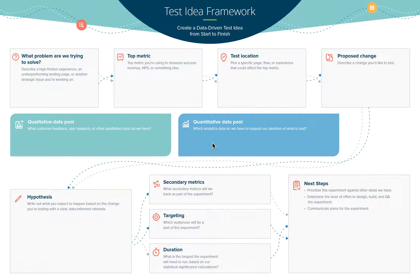Then figure out your test locations — where on those pages that you've identified, what do you want to change? Maybe it's a button, maybe it's a banner, content, whatever it is, determine those. And then create a hypothesis around what with these proposed changes do you expect or want to happen. Make this data-driven — for example, the current conversion rate on the homepage banner is X amount, and by changing the messaging or offering some kind of promotion, we would likely see a 5% increase in conversion on that particular banner.